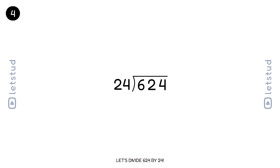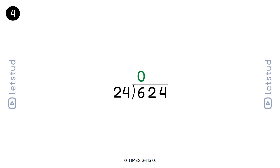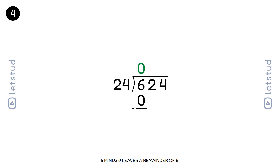Let's divide 624 by 24. We start with the first digit, 6. How many times does 24 fit into 6? 0 times. 0 times 24 is 0. 6 minus 0 leaves a remainder of 6.